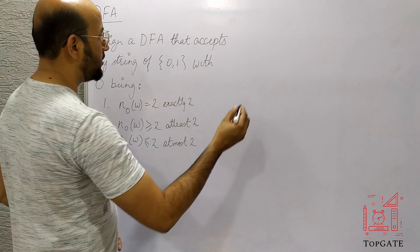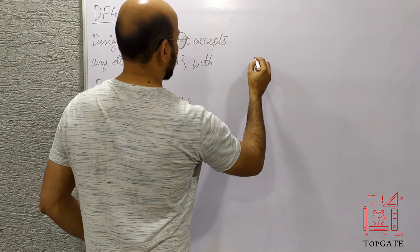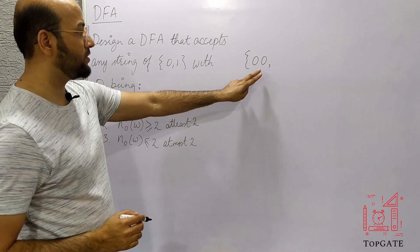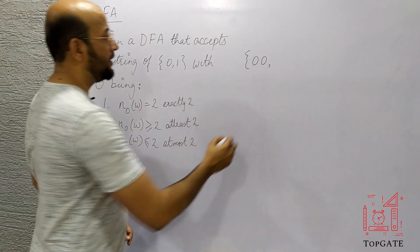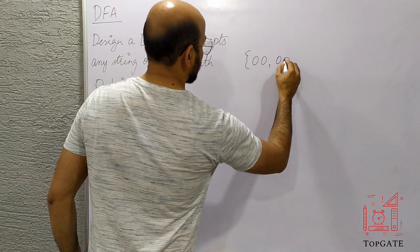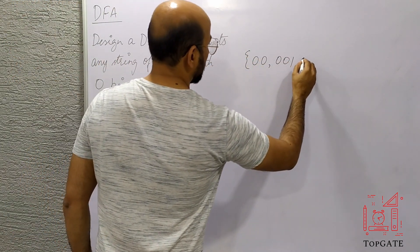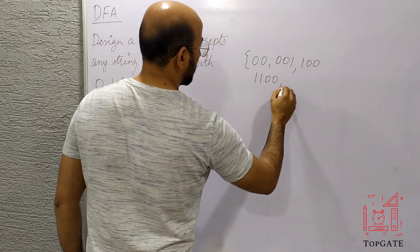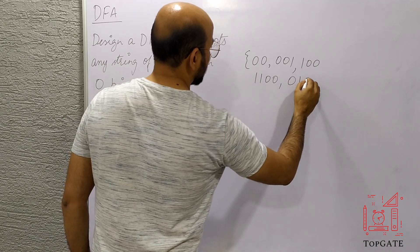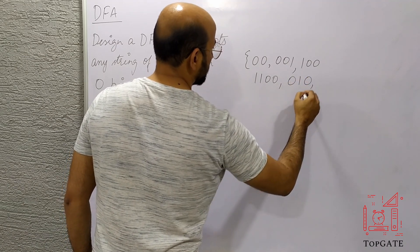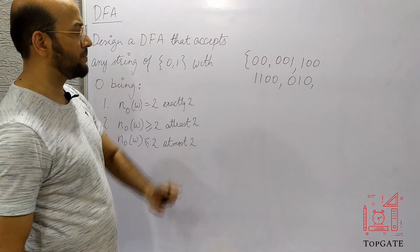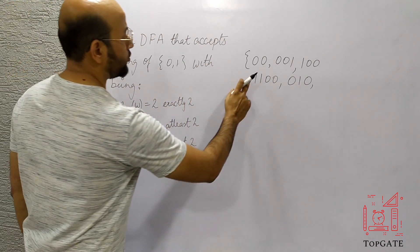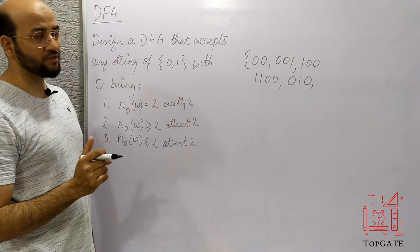The minimum string in this case should be 00 — that is exactly 2 zeros. After that we can have strings like 0,0,1 or 1,0,0 or 1,1,0,0 or 0,1,0 and so on. Any string of any length can be accepted, but the number of 0s should be exactly 2 — that is our main concern.